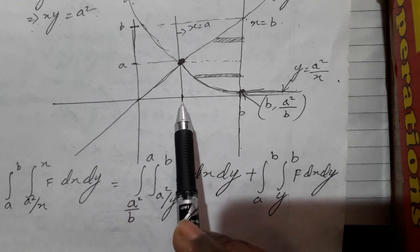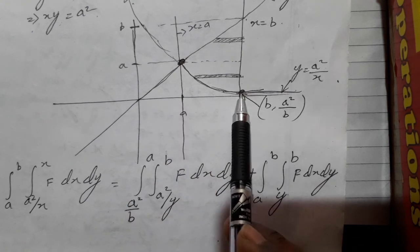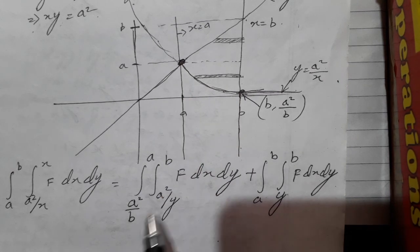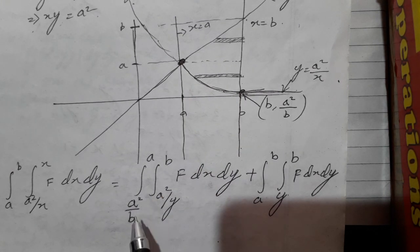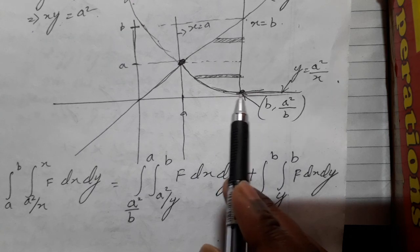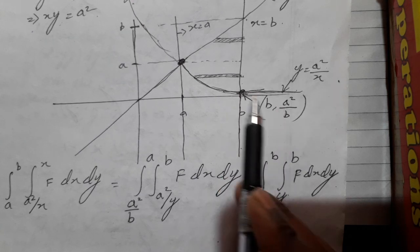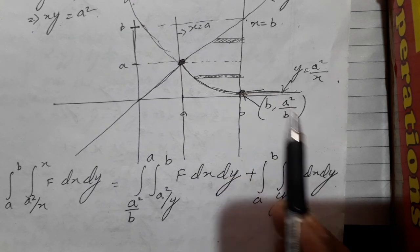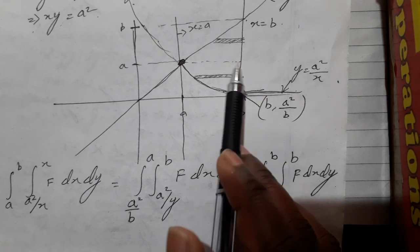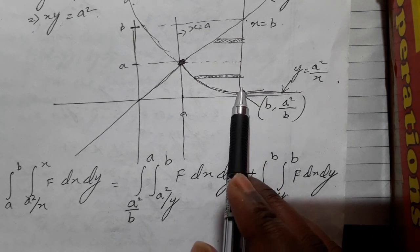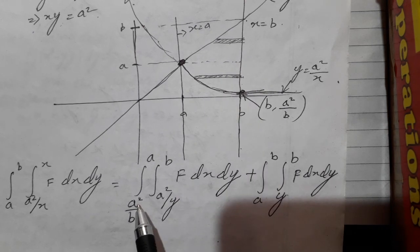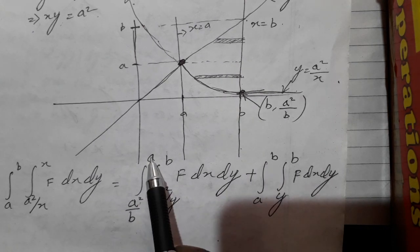The limit for y is ranging from here to here. This point is not 0, so it is ranging from here. The limit of y is ranging from a square by b to a.